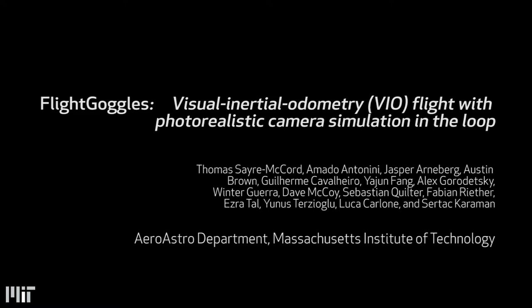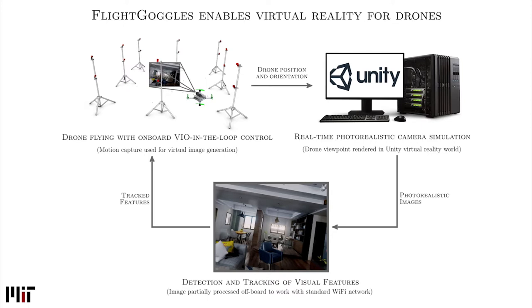We have developed an autonomous drone platform capable of flying indoors using a single camera and an inertial measurement unit for onboard visual inertial odometry and full state control. To enable algorithmic work in a wide range of visual conditions, we have developed a system to replace the drone's onboard camera with images from a virtual environment. While the drone is in flight, photorealistic camera images are generated in real time and used in the loop for visual inertial odometry.